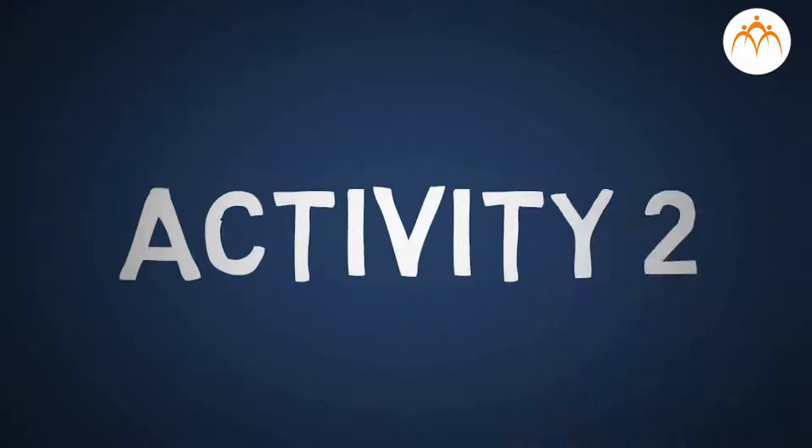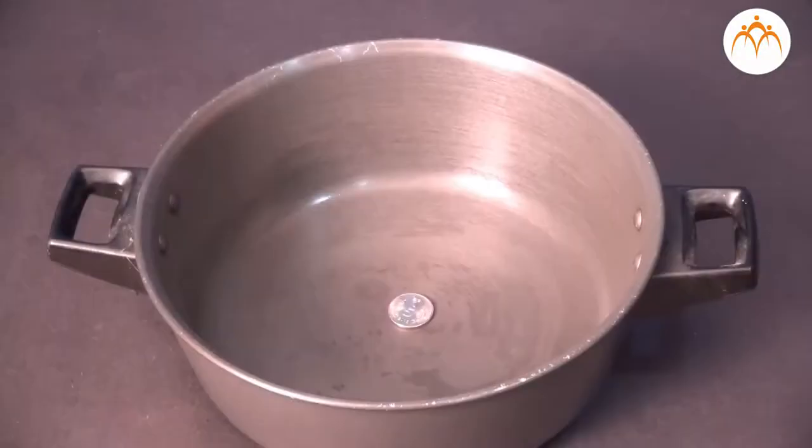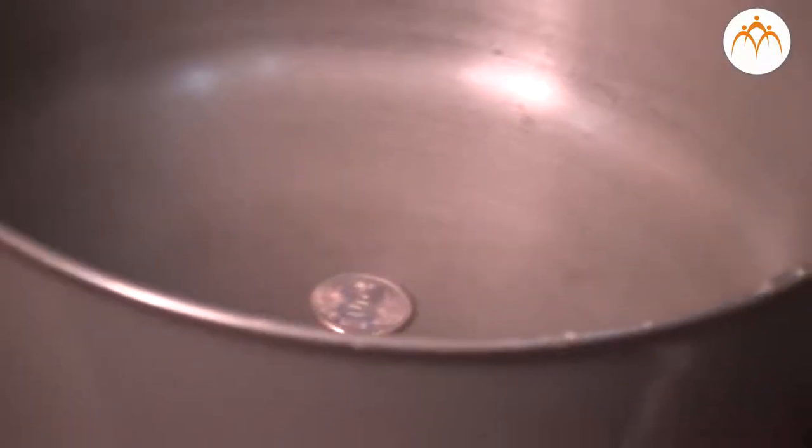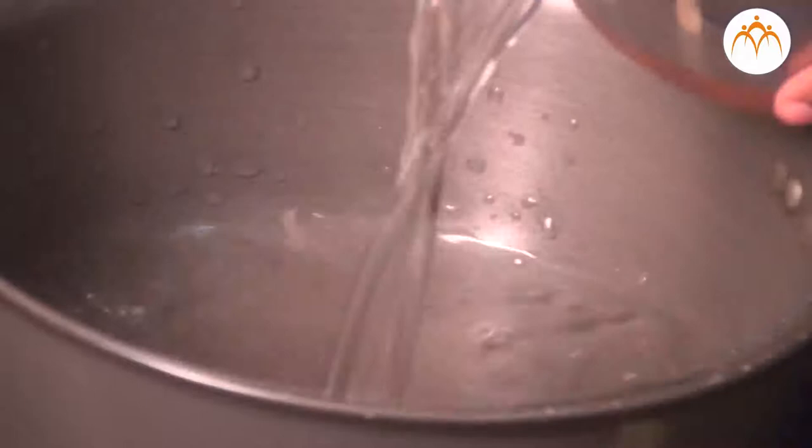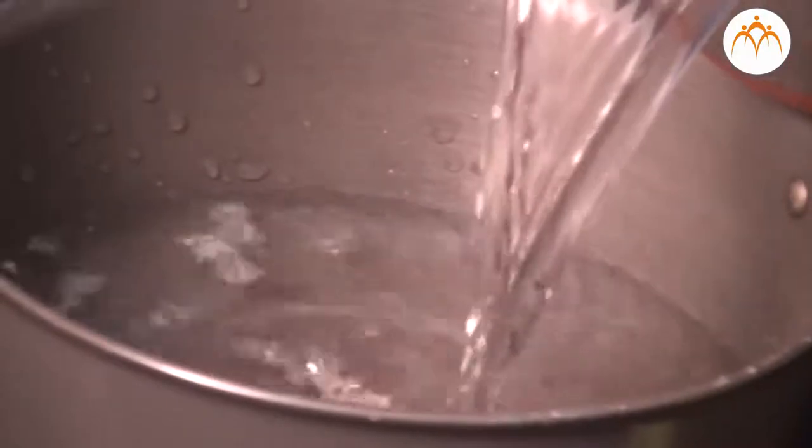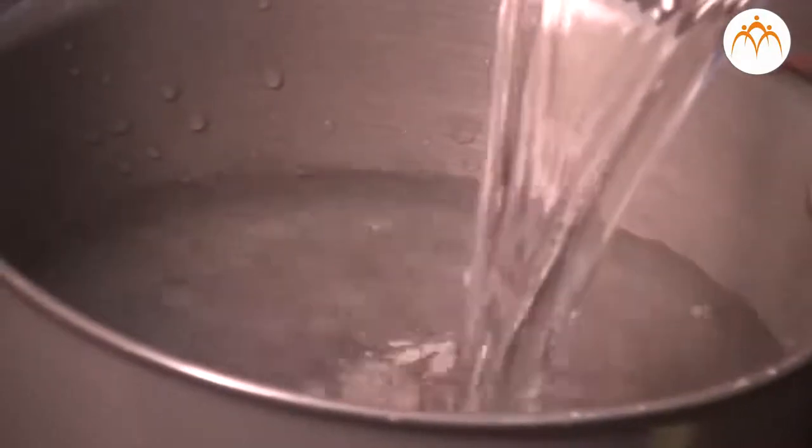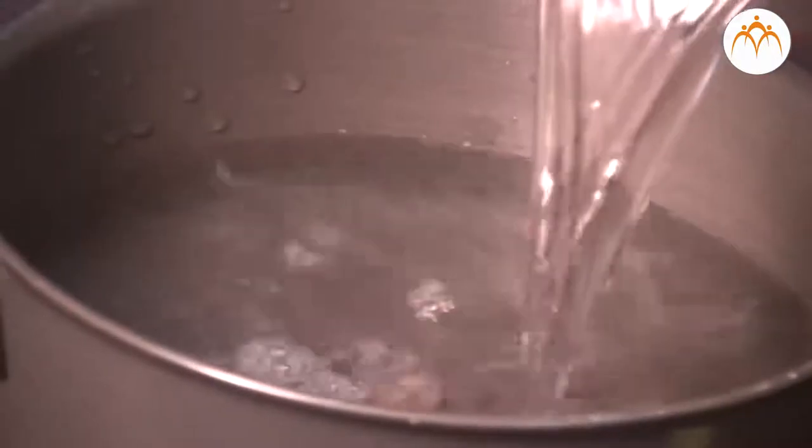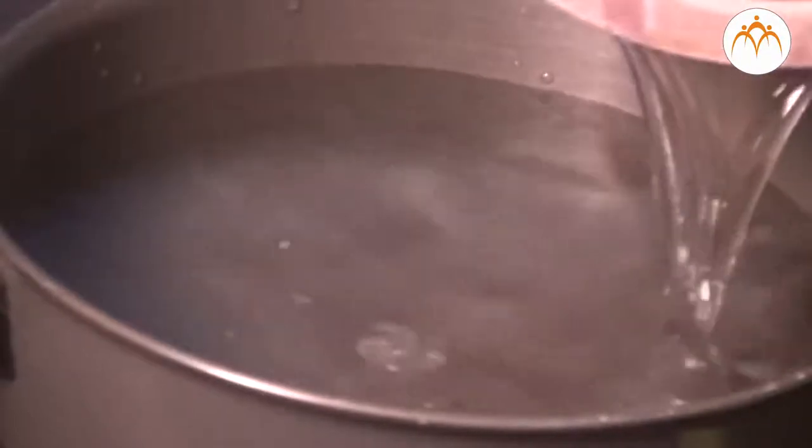Let us now do activity 2 from the textbook. Keep a 5 rupee coin in a metallic vessel. Slowly go away from the vessel. Stop at the place when the coin disappears. Now keep looking in the direction of the coin. Ask a friend to slowly fill water in the vessel. You will be able to see the coin once the level of water reaches a certain height. Why does it happen?